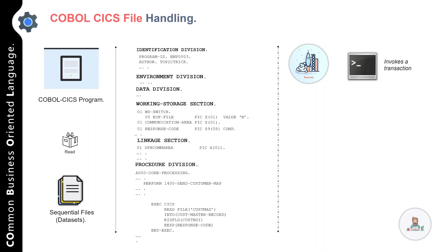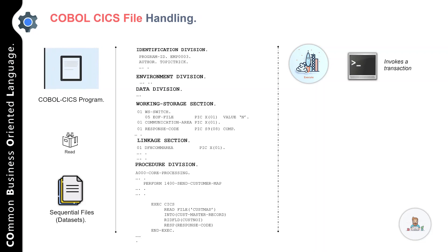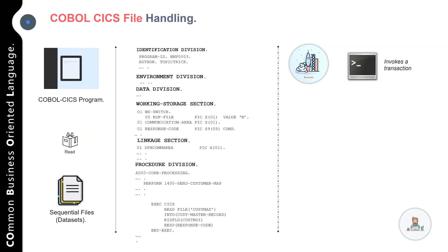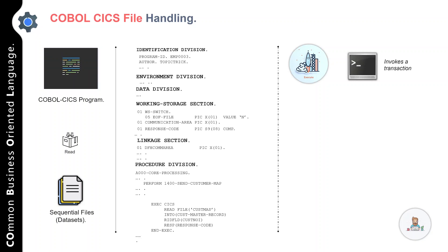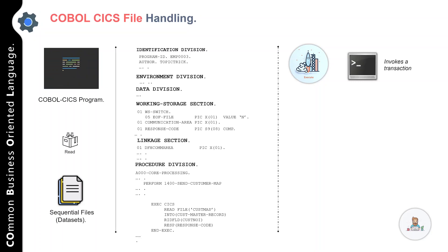In this example we have a paragraph called 000-CORE-PROCESSING, then a PERFORM statement to execute a paragraph called 1400-SEND-CUSTOMER-MAP, and after that a snippet of CICS commands actually reading data from the file. If you notice, we have EXEC CICS and END-EXEC, and within that we have issued the READ statement to read data from the file.